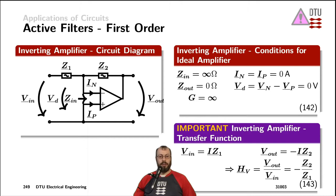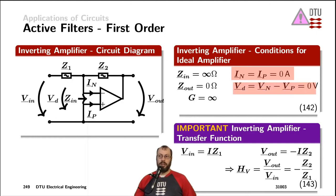Before we investigate active first-order filters, let's have a look at the amplification through an operational amplifier first. An ideal operational amplifier has no input current at either of its inputs — not at the non-inverting input and not at the inverting input. Furthermore, the voltage across those two nodes is always zero volts, so Vn minus Vp is zero. In the circuit diagram, we have the current for the inverting input on this branch and the input current of the non-inverting input down here.